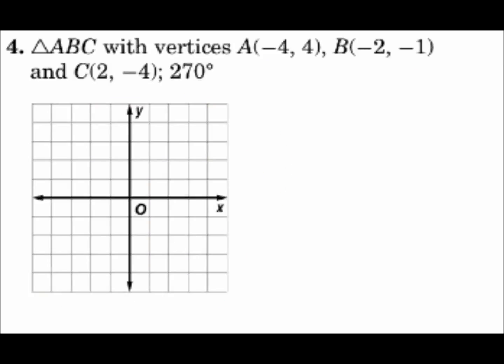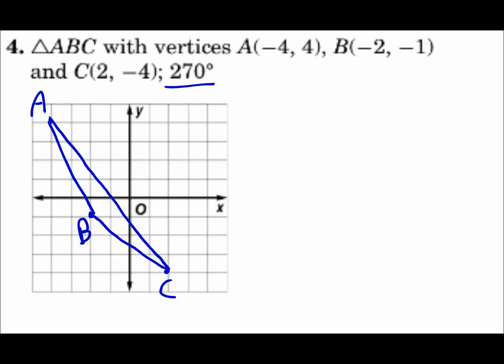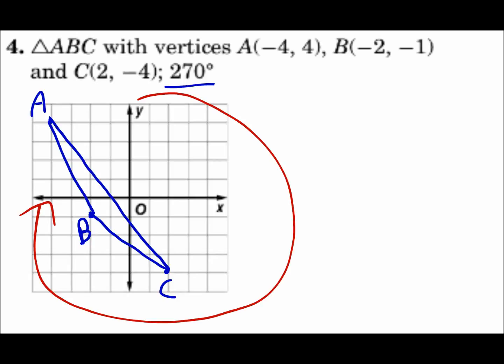Triangle ABC with vertices A(-4, 4), B(-2, -1), and C(2, -4). Connect the dots, and we're going to rotate 270 degrees, so every point is going to go three-quarters of the way around. Technically, you could tip your head to the left 90 degrees, because 270 degrees clockwise is the same as 90 degrees counterclockwise — so really you'll be tipping your head a quarter turn that way.